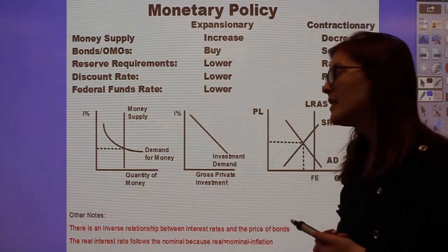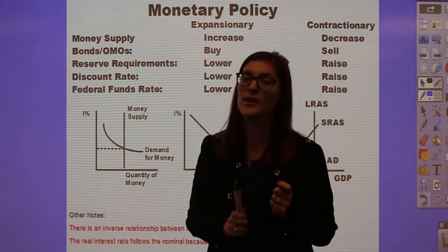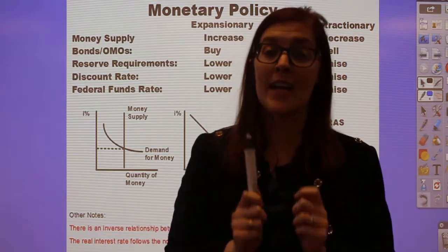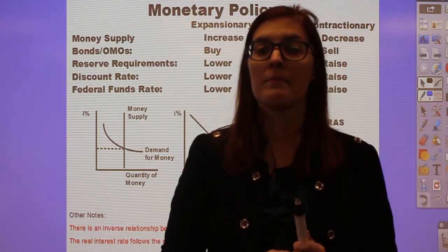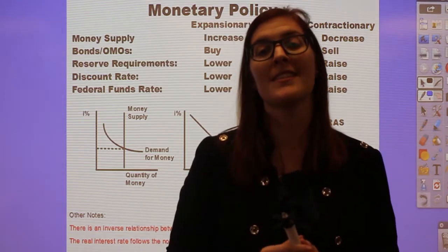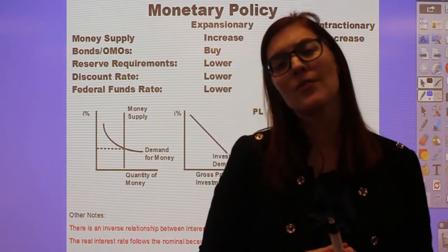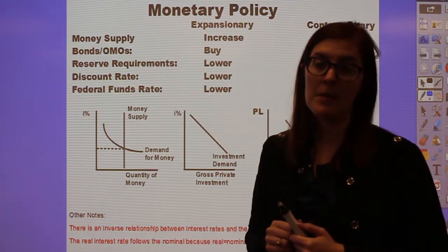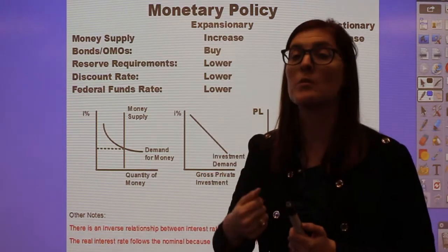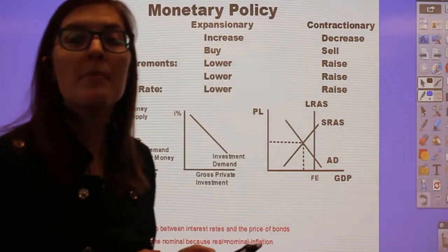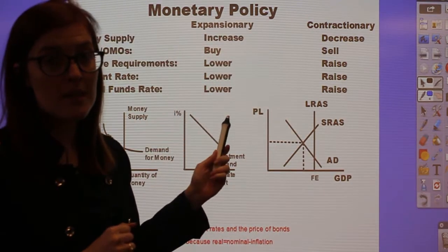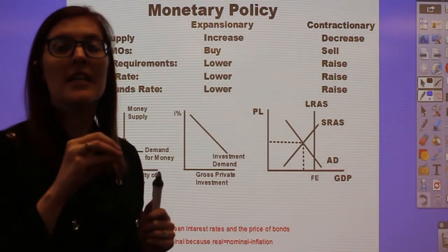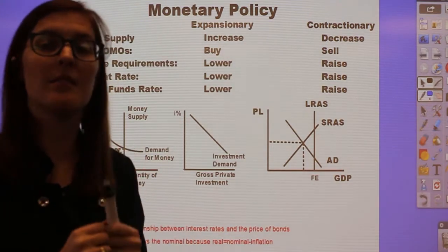The next tool is the reserve requirement. This tool is not used as often, but you still need to know it. The Fed can change the money supply by raising or lowering the percentage banks must keep in the vault. To increase the money supply, the Fed lowers the reserve requirement so banks can loan out more money. To shrink the money supply, the Fed raises the reserve requirement, forcing banks to keep more money sitting idle in the vault.